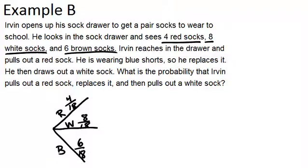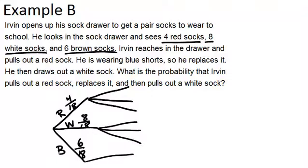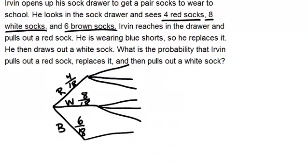Now once he has pulled out a sock and replaced it and is now pulling out another one, we need to add more branches to our tree. Ultimately you would need to add three more branches to each of these endpoints because there's three possible colors you could choose for each of the colors you could have chosen the first time.